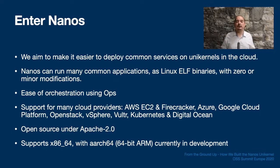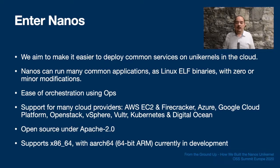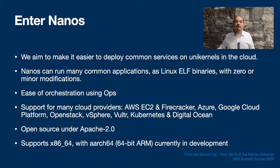We're focusing on running a core set of services in the cloud really well. Our orchestration tool Ops aims to ease deployment. Ops can take an arbitrary Linux ELF binary, extract the shared libraries it depends on from the host environment, package it up as a bootable disk image, and run it either under QEMU locally or deploy it to a cloud provider. For convenience, Ops offers pre-built packages of common services and language runtimes, which can be used to quickly spin up an instance with only your source code and configuration files.